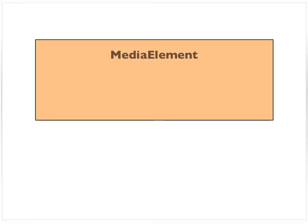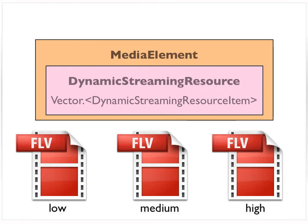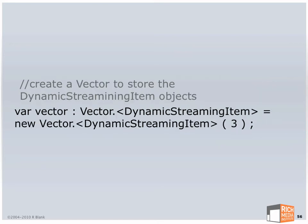The way dynamic streaming works: we have the media element, and normally we'd point it to a URL resource for some FLV. With dynamic streaming, we point it to a vector of dynamic streaming resource items. I'm going to create a new dynamic streaming resource, pointing it to an RTMP URL — the address of my Flash Media Server, the address that Akamai or Influxus gave me. Next, I'm going to create a vector. If you haven't worked with vectors yet, those were introduced in Flash Player 10 — they are typed arrays.